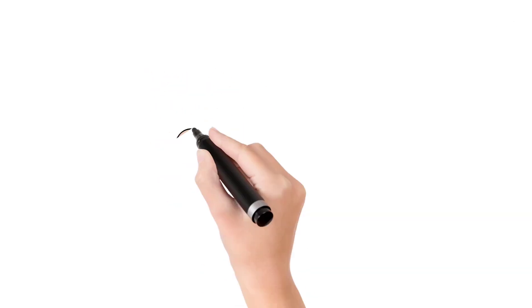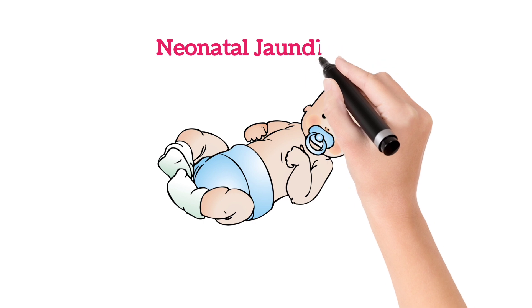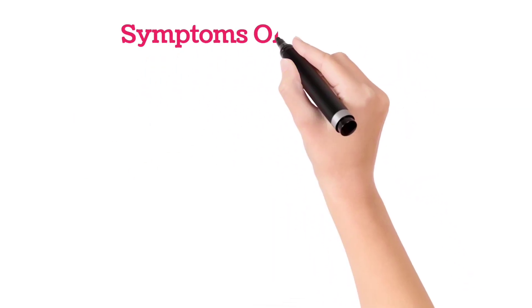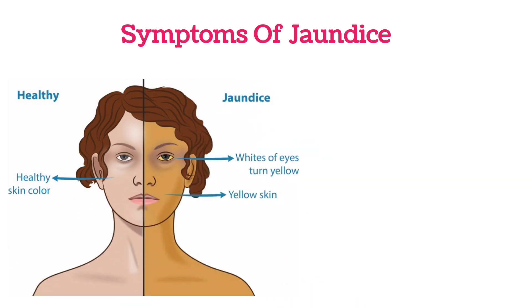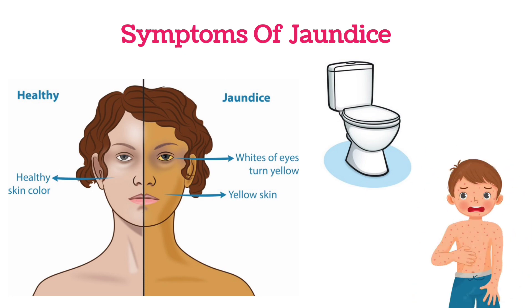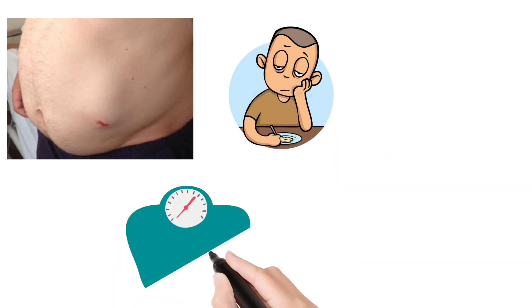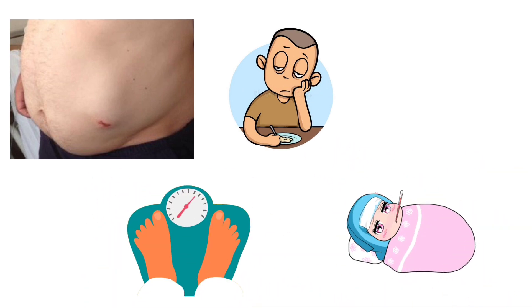Jaundice is most commonly seen in newborns, and this condition we call neonatal jaundice. Coming to the symptoms: in jaundice there will be yellow skin, yellow sclera or yellow eyes, dark color urine, and there will be pruritus, that is itching sensation. Abdomen swelling will be seen, there will be loss of appetite, weight loss, and fever.